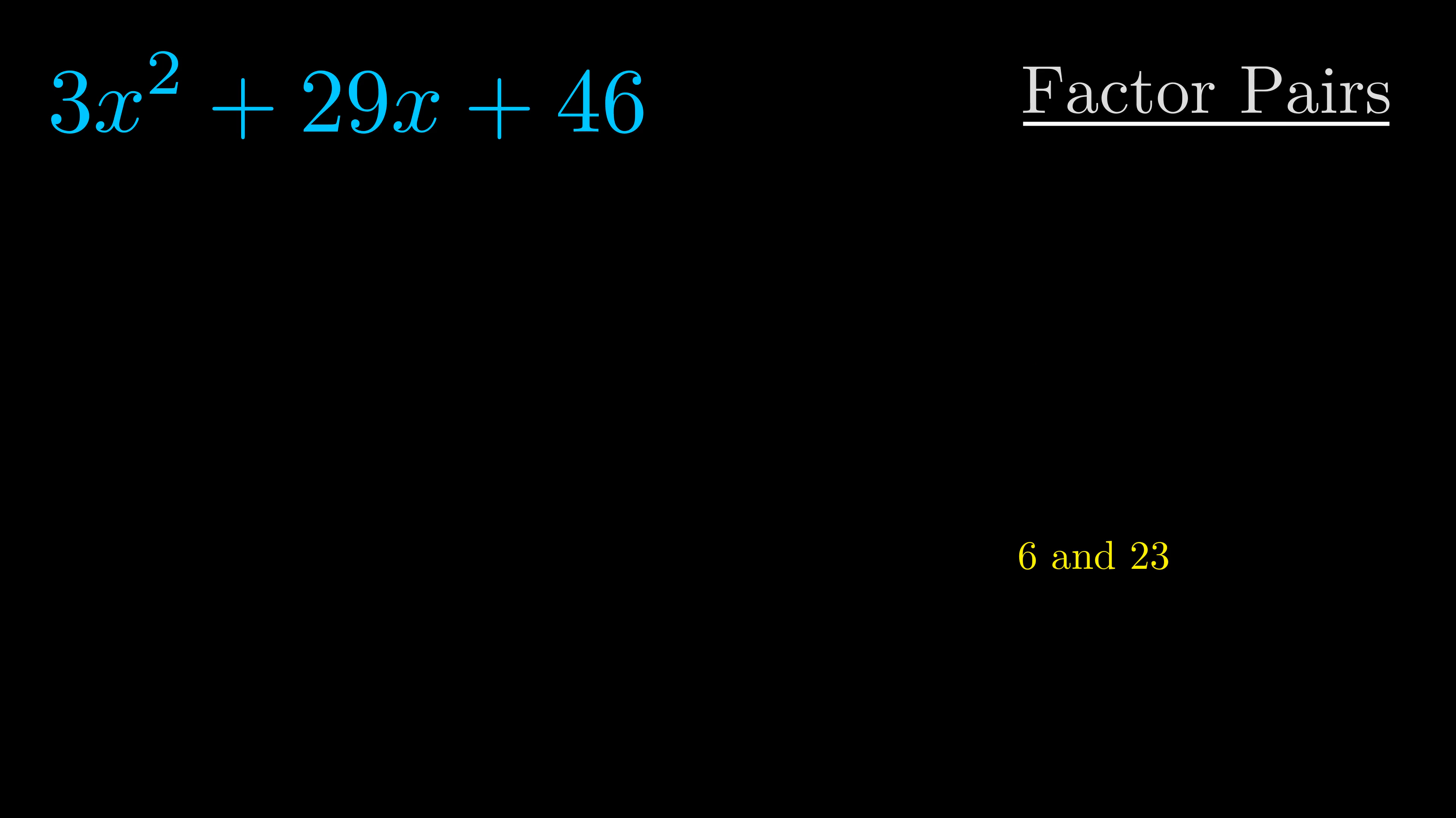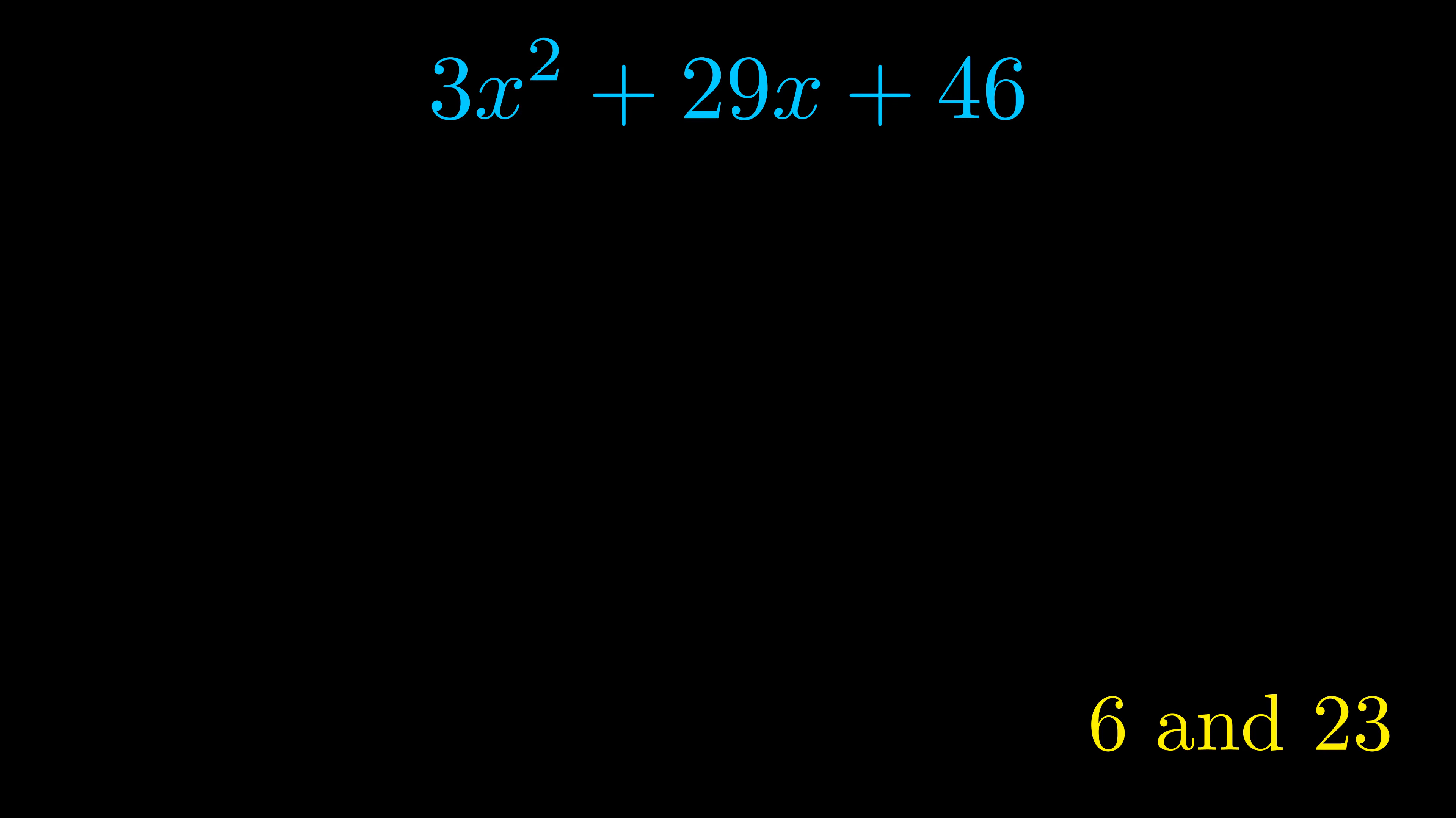Now once we have this factor pair, what we want to do is we want to use it to split up the b value. Notice how I'm going to keep my first term and my last term completely unchanged. It is only this b term highlighted in yellow that gets expanded into this correct factor pair.